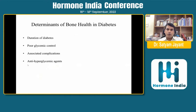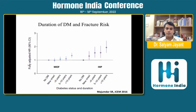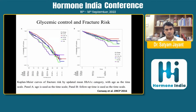The determinants of bone health in diabetic patients include duration of diabetes, poor glycemic control, associated complications, and anti-hyperglycemic agents used in treatment. As diabetes duration increases, fracture risk increases. Poor glycemic control is another important risk factor — individuals with poor glycemic control are more prone to fracture.